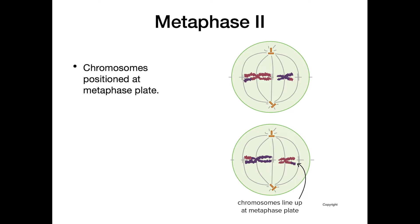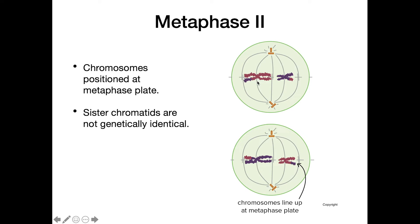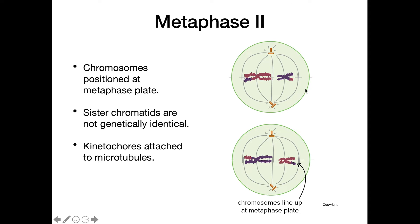In metaphase 2, chromosomes line up again at the metaphase plate. But in metaphase 2 it's the sister chromatids that line up at the metaphase plate instead of the homologous pair. These sister chromatids are no longer genetically identical because crossing over has changed one of the sister chromatids. The kinetochores then attach to microtubules from the centrosomes.